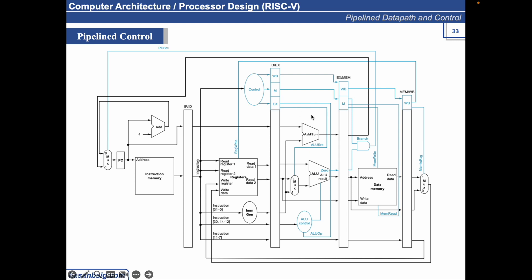Whatever signals are required in the EX stage, we wire them there. In the EX/MEM register, the memory-related signals are used — branch, zero, whether to write memory, whether to read memory — everything is used here. The write-back signals are carried forward into the next stage. Here you can see the RegWrite signal being asserted: if the instruction in this phase is writing data into a register, it asserts the RegWrite signal. The register is specified by one path, and the data is specified by the write-data path. The mux will also decide whether data is coming from memory or from the ALU.